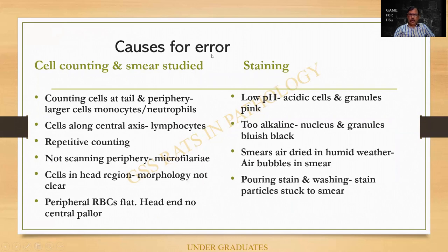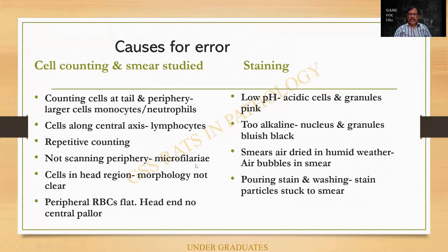There are some sources of error when we count. Counting cells at the tail and periphery will repeatedly include the larger cells. If I count only along the central axis, lymphocytes will be over-represented. I can also make the mistake of not scanning the periphery — I am supposed to scan the slide under low power or even high power to rule out parasites such as microfilaria. Microfilaria is an exam slide kept under high power, not under oil immersion. Cells in the head region are not spread out so morphology cannot be clearly made out. In the peripheral region RBCs are flat, and it is only at the junction that the central pallor and peripheral rim of hemoglobinization can be made out.